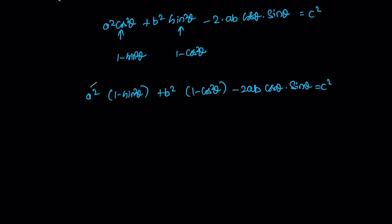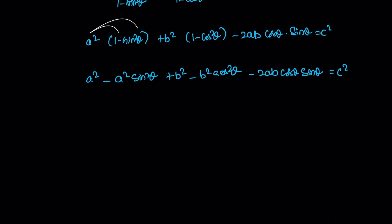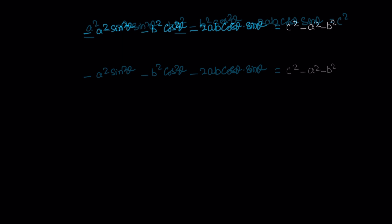Expanding: a² minus a² sin²θ plus b² minus b² cos²θ minus 2ab cosθ sinθ is equal to c². Moving the constants a² and b² to the right side: minus a² sin²θ minus b² cos²θ minus 2ab cosθ sinθ is equal to c² minus a² minus b².